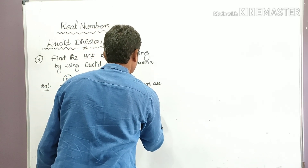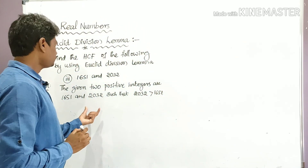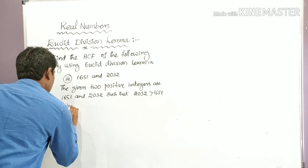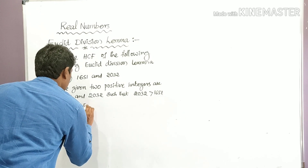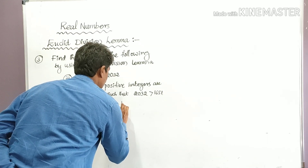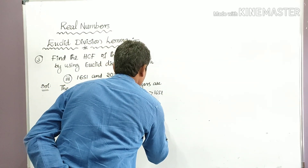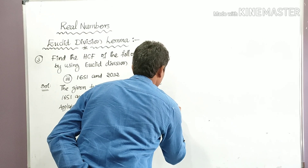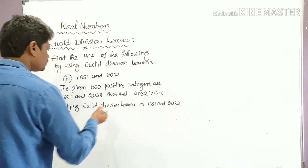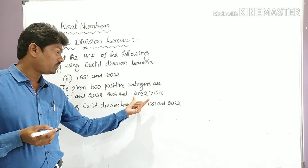2032 is greater than 1651. Now applying Euclid's Division Lemma to 1651 and 2032. These are the two given numbers — 1651 and 2032. We have to identify the larger number, which is 2032, and divide the larger by the smaller.